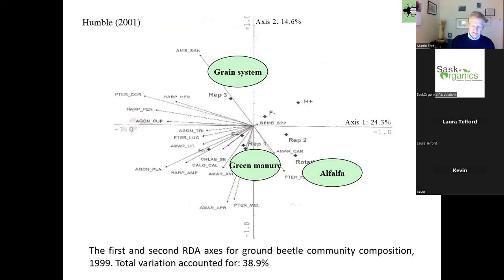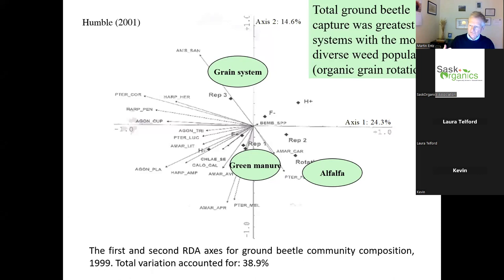We used pitfall traps to trap carabid beetles, which Shawna sorted and painstakingly identified. In our study we had three organic systems: a grain-only organic system, one with green manures in the rotation, and one with alfalfa mixed with grain crops. The arrows in the diagram point to different species of ground beetles. The conclusion is that different crop rotations resulted in different beetle populations. The greatest diversity of plant population resulted in the most diverse and greatest number of beetles - diversity of plants means diversity of beneficial insects.